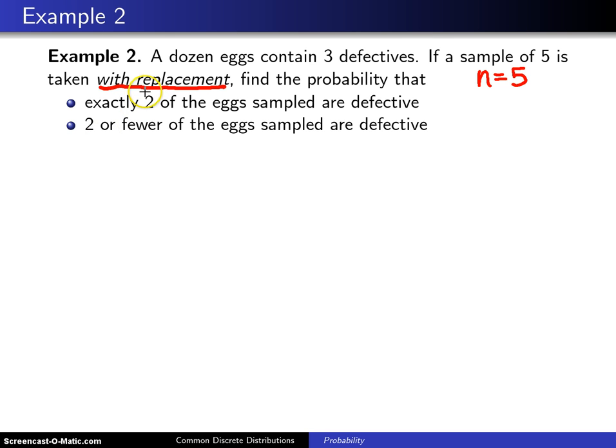But in this particular case, we do replace them and that allows us to have a constant probability of success on each trial. What is success in this case? Since we keep looking at getting a defective egg, we're going to define a success to be getting a defective egg. You can define a success to be anything you want, including a negative event like a defective egg.